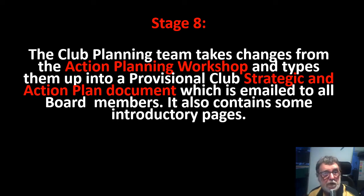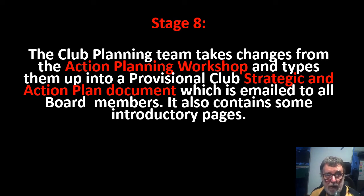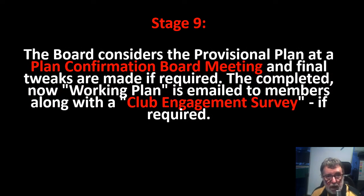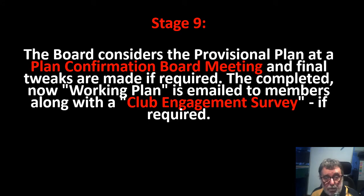Stage eight is when the club planning team takes the changes from the action planning workshop and types them up into a provisional club strategic and action plan document, which is emailed to all board members. It contains the strategic plan discussed in session one, the action plan for every major focus area committee, and also an introductory page. The board at its next meeting — what we call a plan confirmation board meeting — considers the provisional plan and any final tweaks might be made. The completed working plan is then emailed to members along with a club engagement survey, if required.